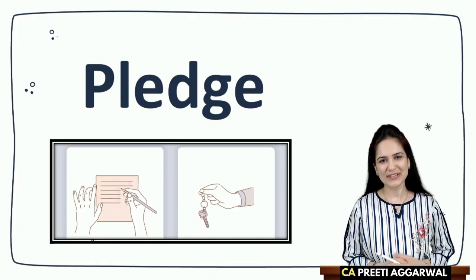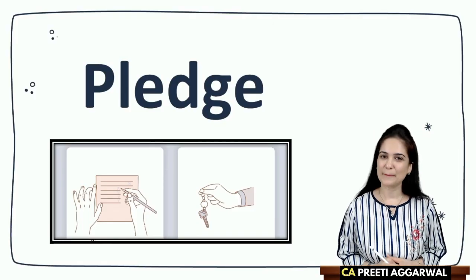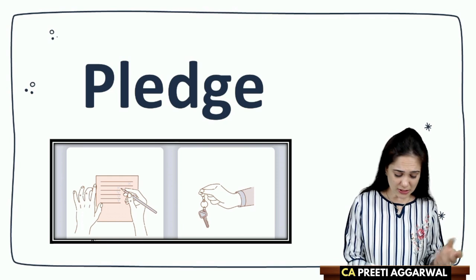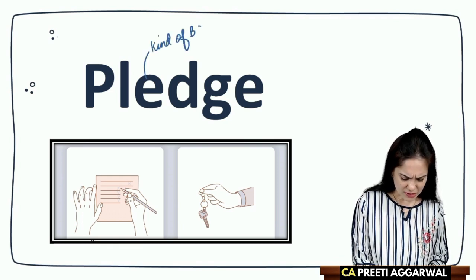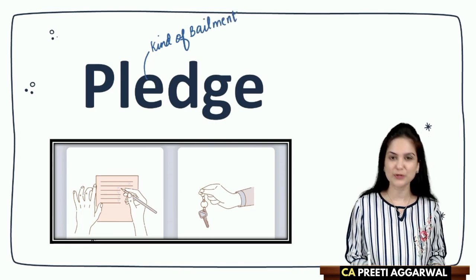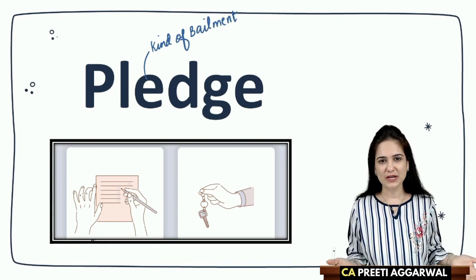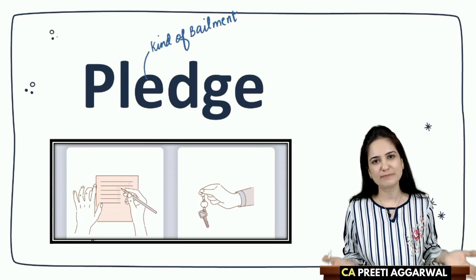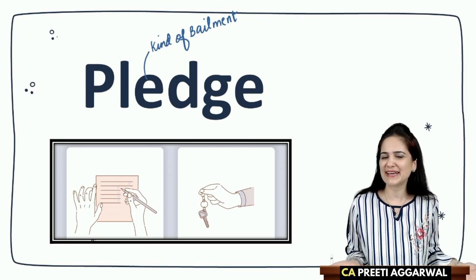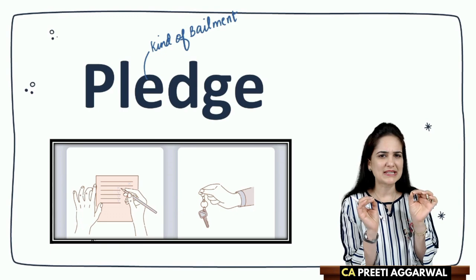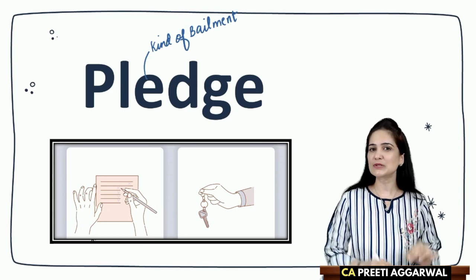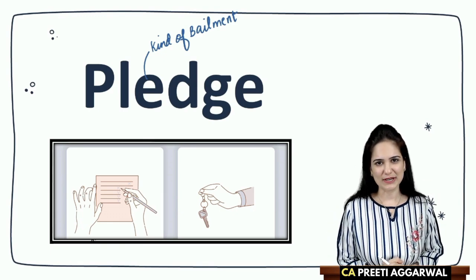Let us discuss a new unit: Pledge. Pledge is a kind of bailment. We just discussed the concept of bailment in the last unit. Then why are we studying it separately? There are a few differences and we are going to study those differences in this unit.